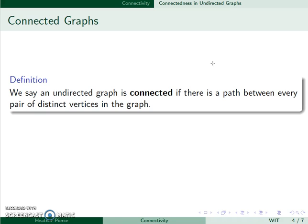We say an undirected graph is connected if there is a path between every pair of distinct vertices in the graph.